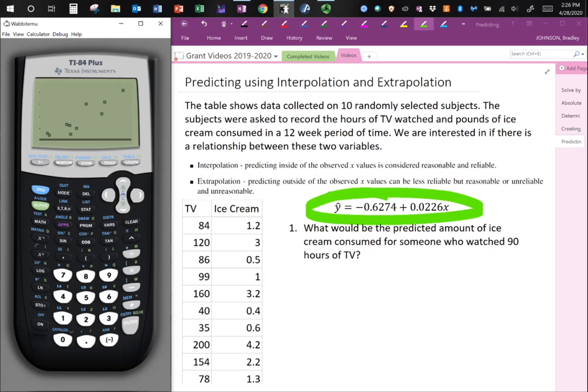Now in that previous video, I've made this scatter plot using the data shown here on TV and ice cream. TV is in hours and ice cream is in pounds and this is over a 12-week period of time.